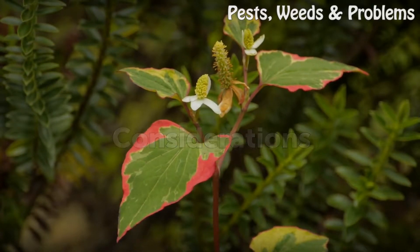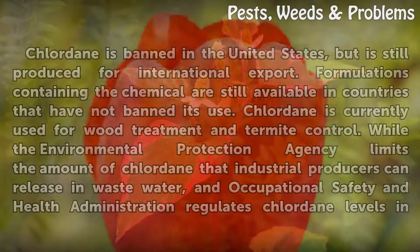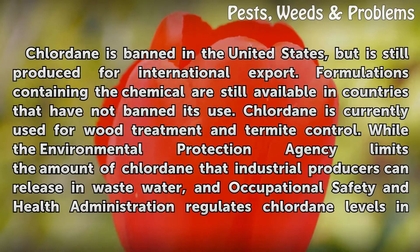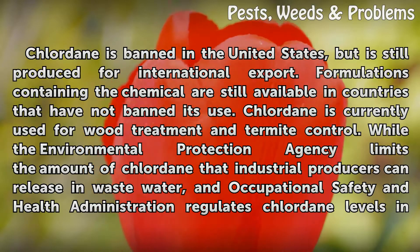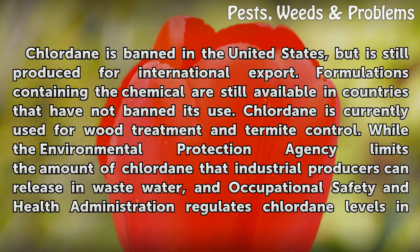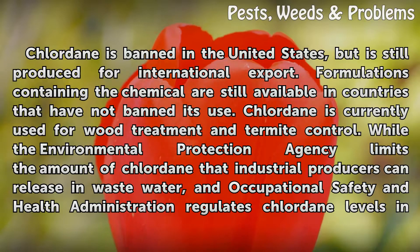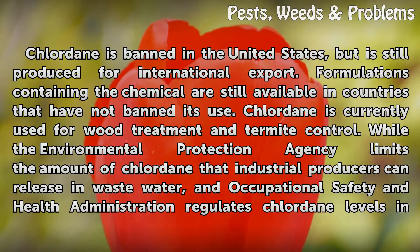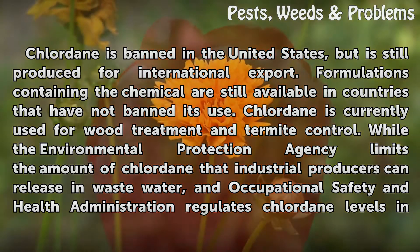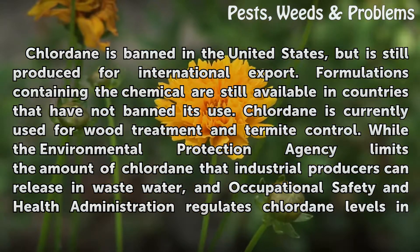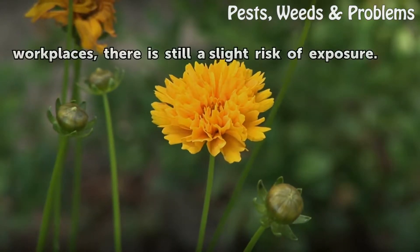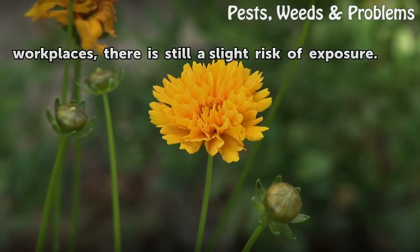Chlordane is banned in the United States, but is still produced for international export. Formulations containing the chemical are still available in countries that have not banned its use, and it is currently used for wood treatment and termite control. While the Environmental Protection Agency limits the amount of Chlordane that industrial producers can release in wastewater, and the Occupational Safety and Health Administration regulates Chlordane levels in workplaces, there is still a slight risk of exposure.